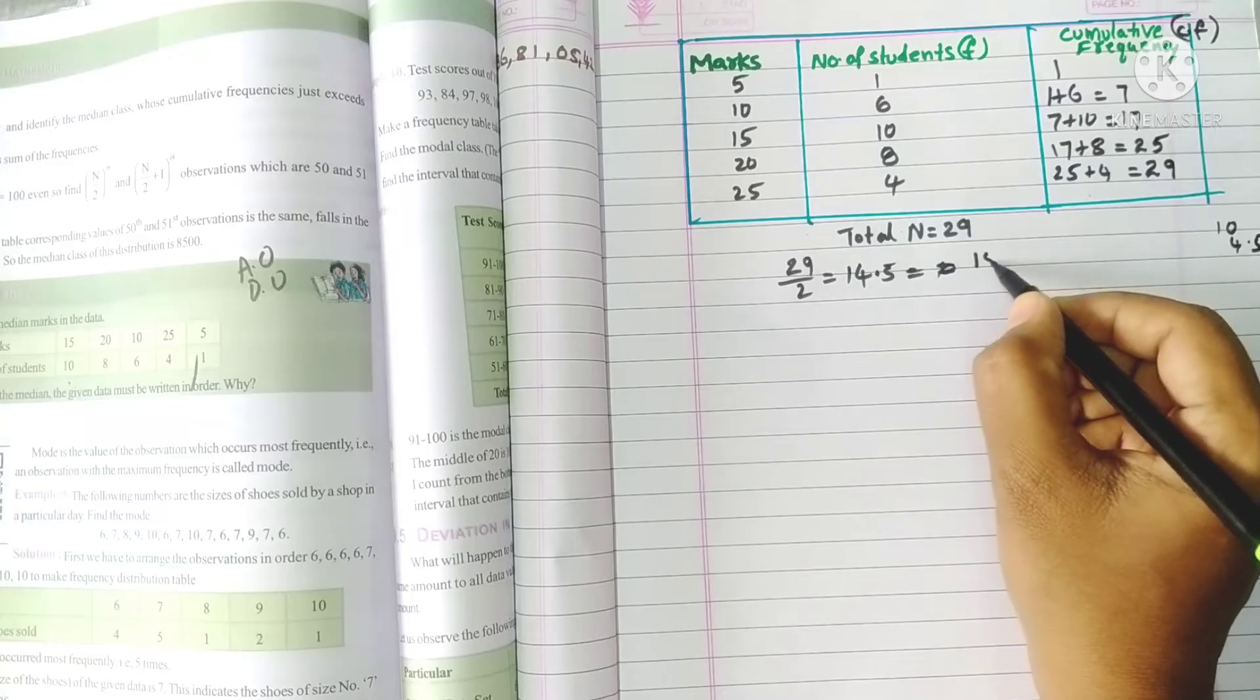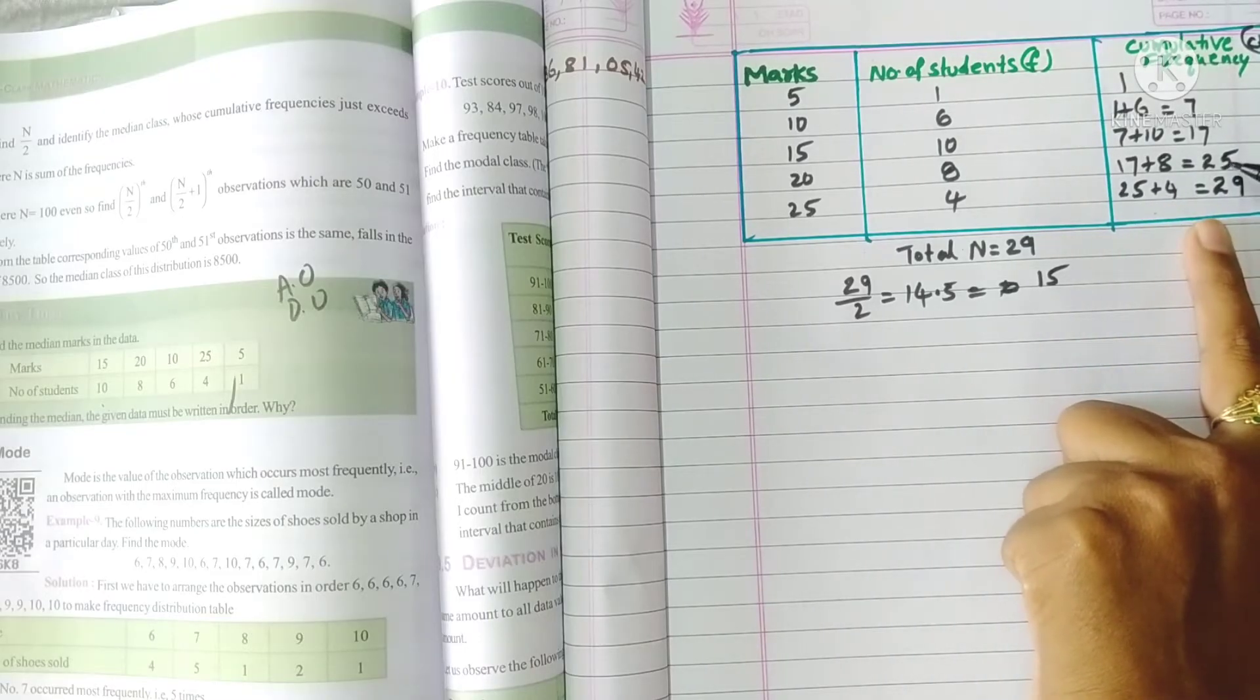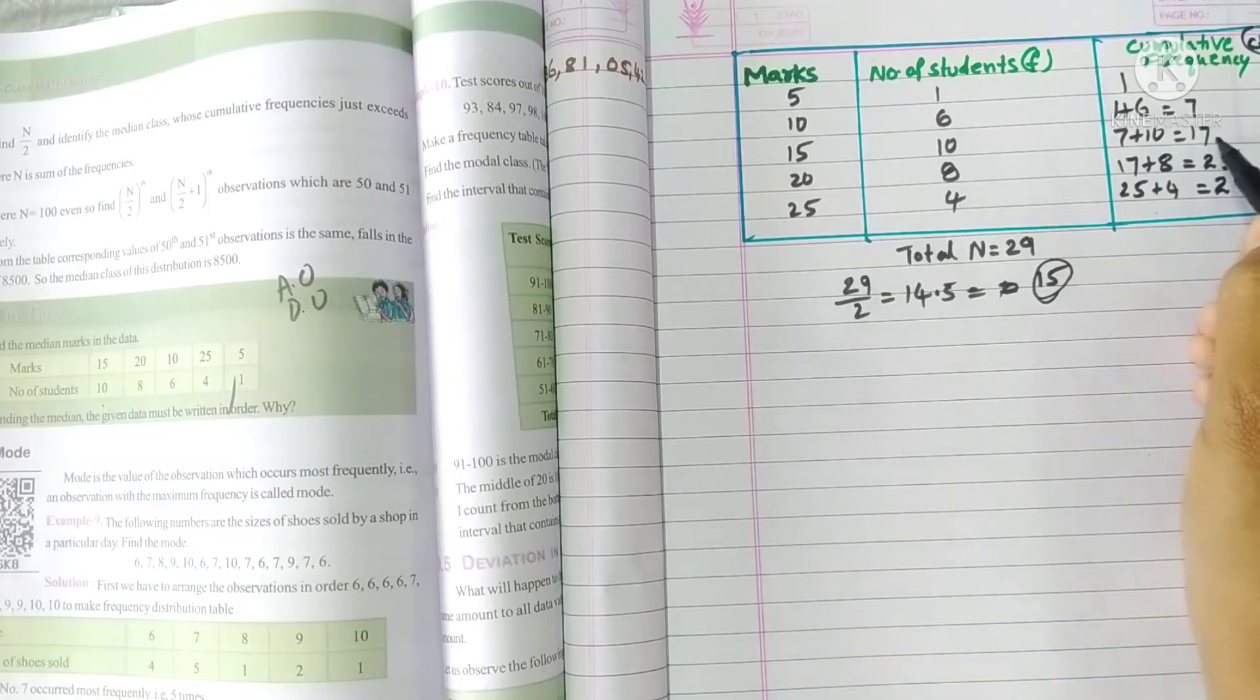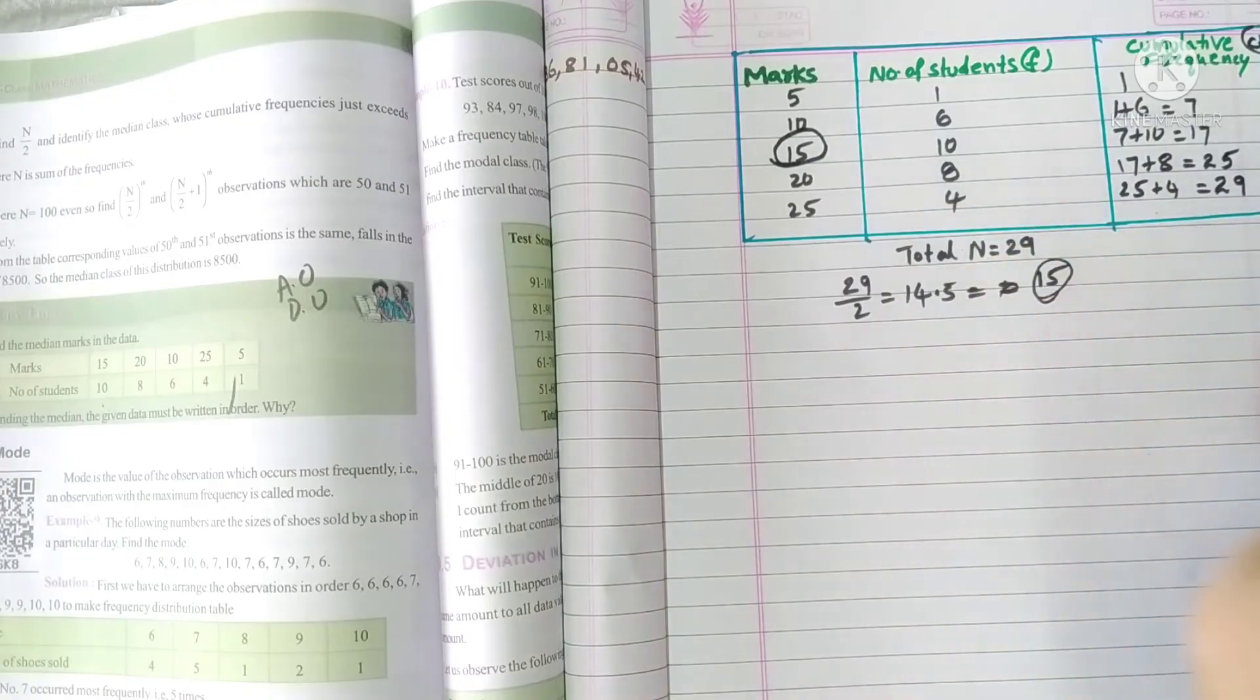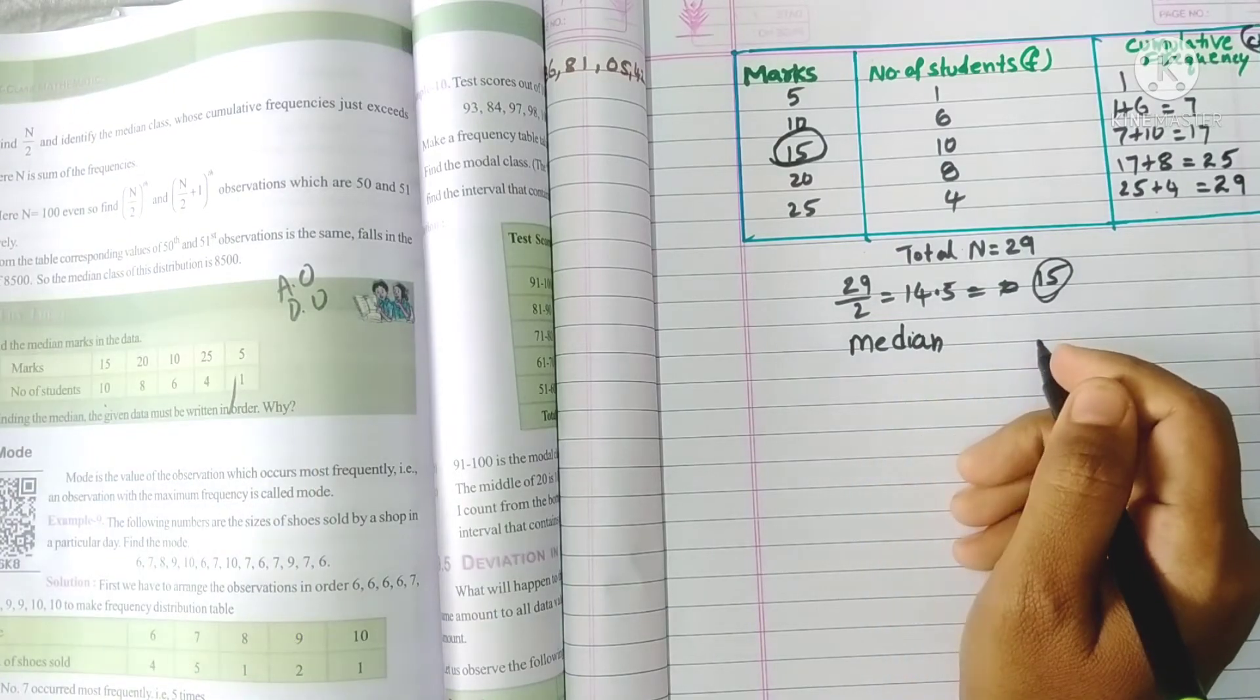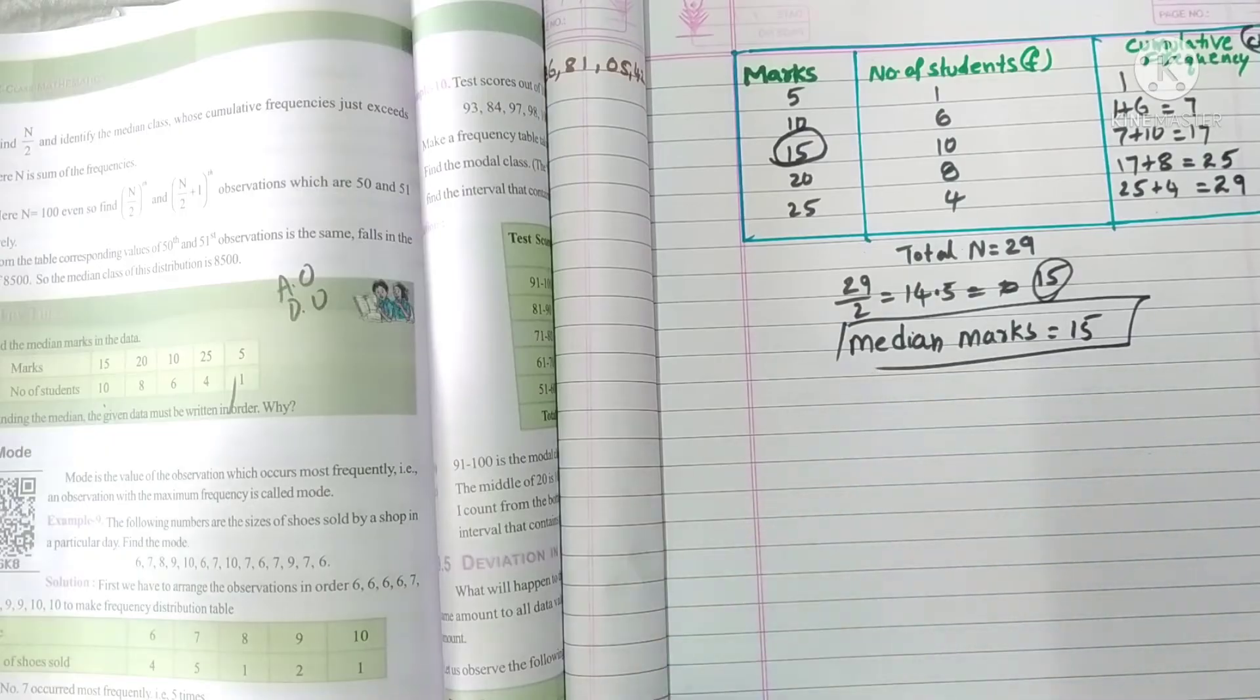Now n by 2 value is 15. So just come to the cumulative frequency table and here check the number just greater than this n by 2 value. After 7, 17 only. So this is just greater than 15. So the median marks is equal to 15. That's it.